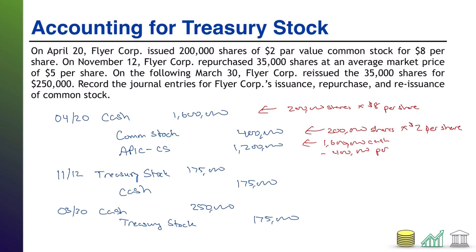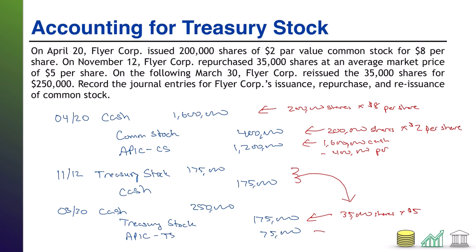Therefore, that is what we attribute to taking out of treasury stock. We're selling it all — so 35,000 shares times $5 per share, that's $175,000 coming out of treasury stock. And the excess money received on top of the reissuance — in this case another $75,000, which is $250,000 cash received minus the $175,000 attributed to treasury stock par — goes to additional paid-in capital, specifically associated with treasury stock.